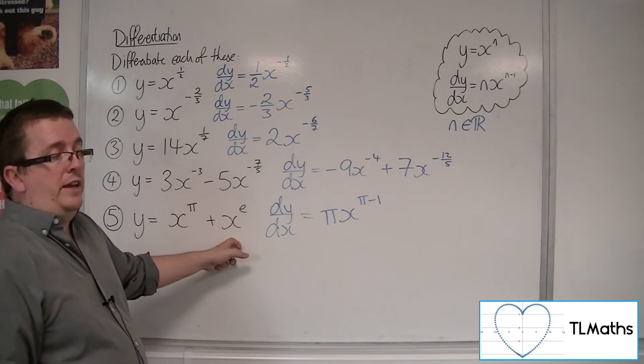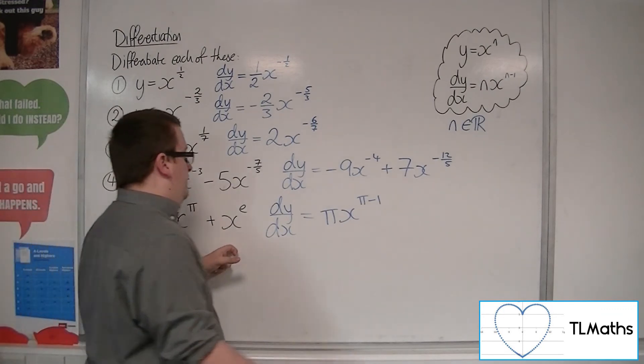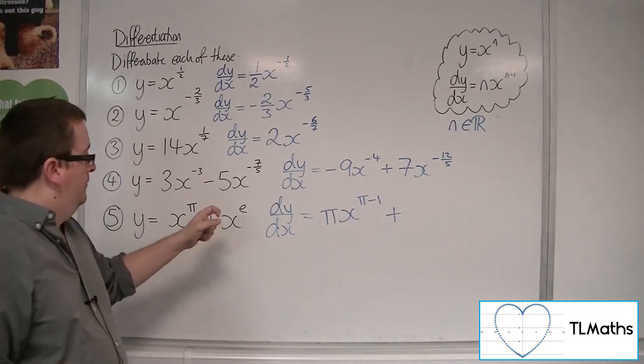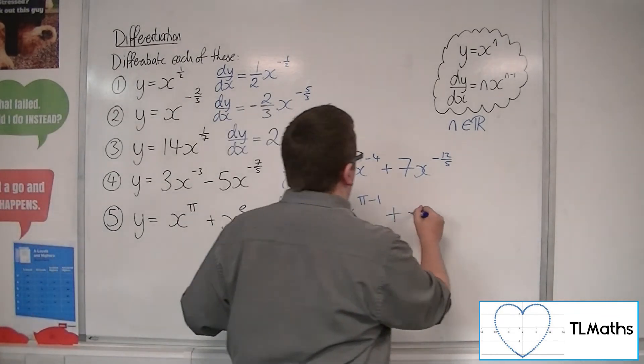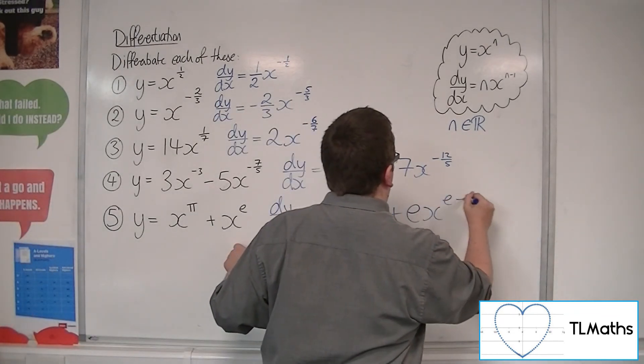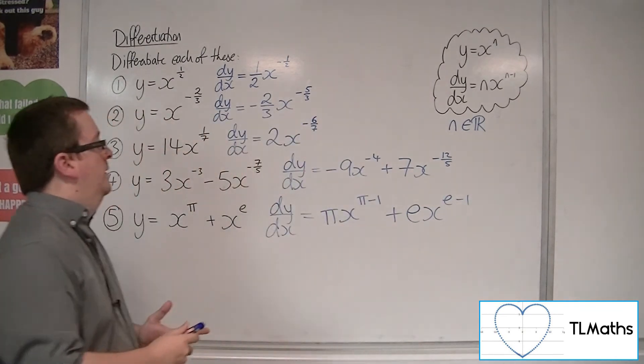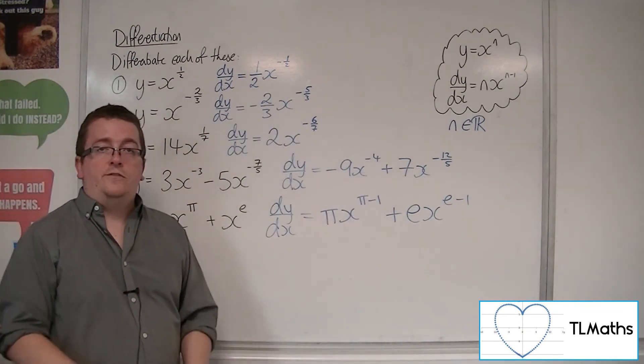I won't write it as a decimal, okay, or round a decimal. I want to write it in exact form. Plus, the e comes down to the front, and I take 1 off the power. Okay? So that's what it would look like in exact form.